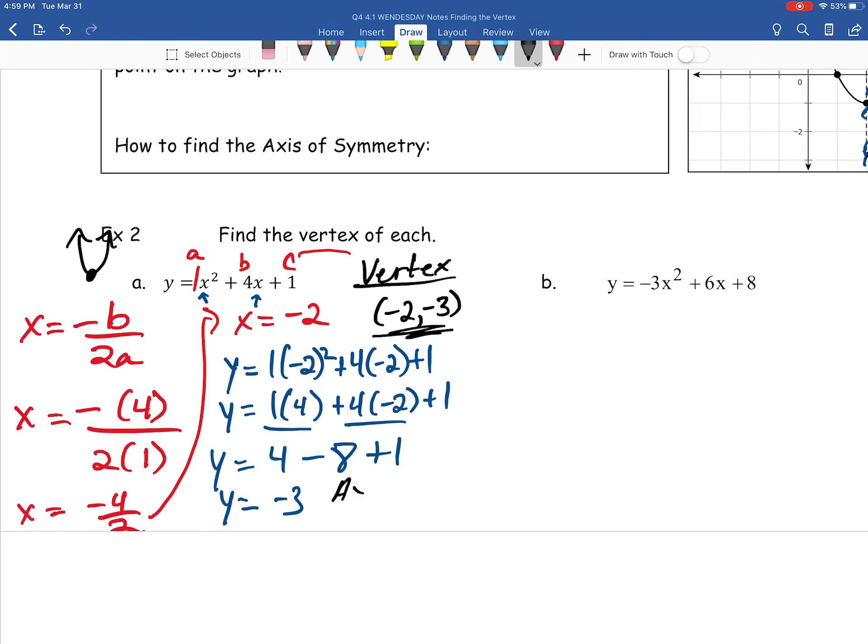Now, that axis of symmetry, this takes literally two seconds. It's pretty much just your x value from your vertex. So, it's x equals negative 2. Boom. Done. But, we'll talk more about that in the future. So again, that is our example 2A from our 4.1 set of notes. Thank you.